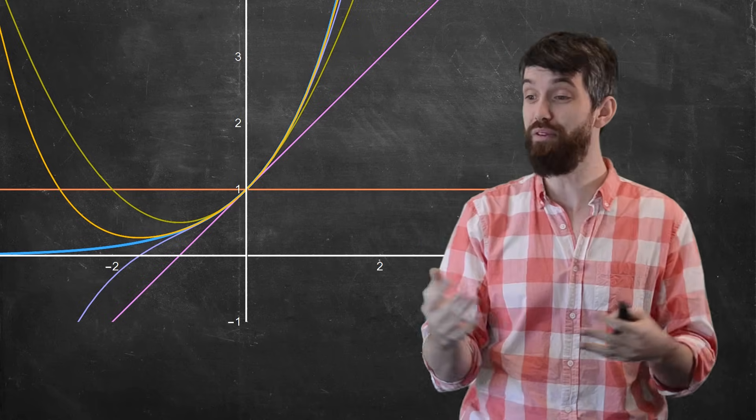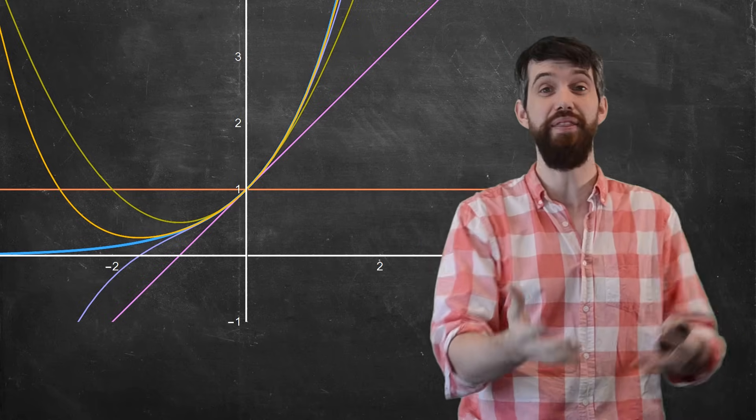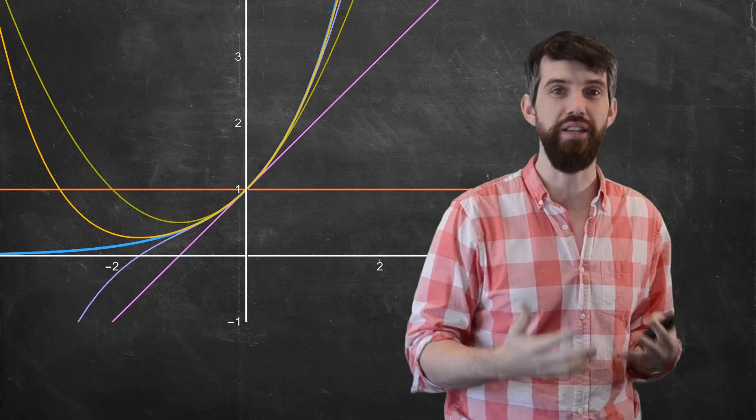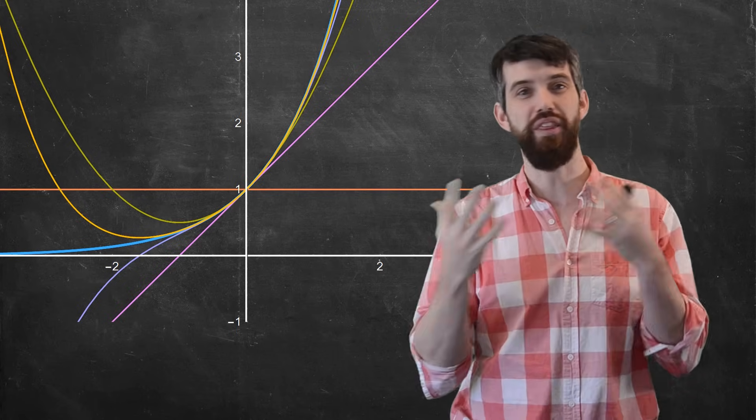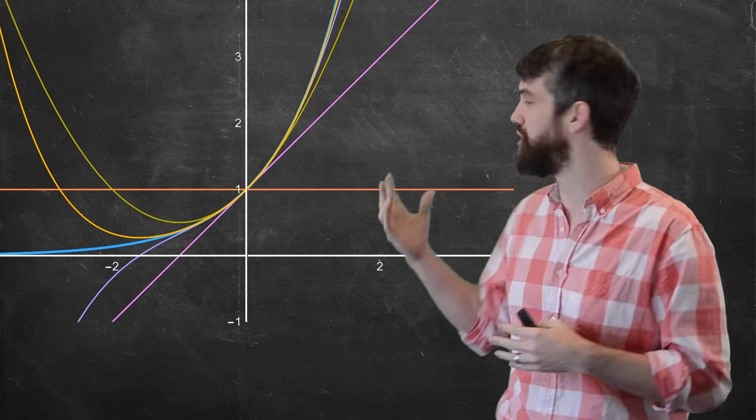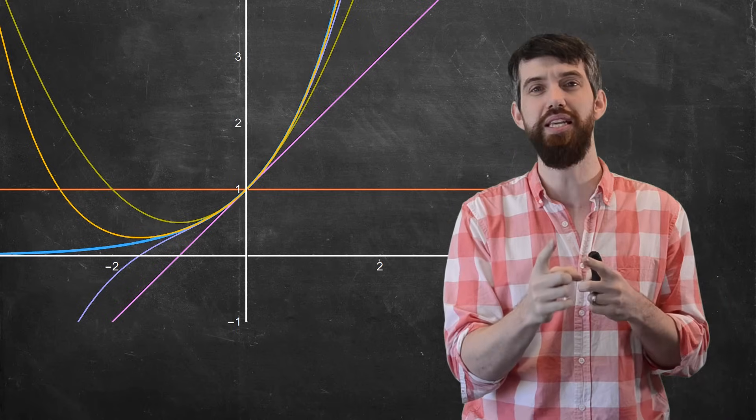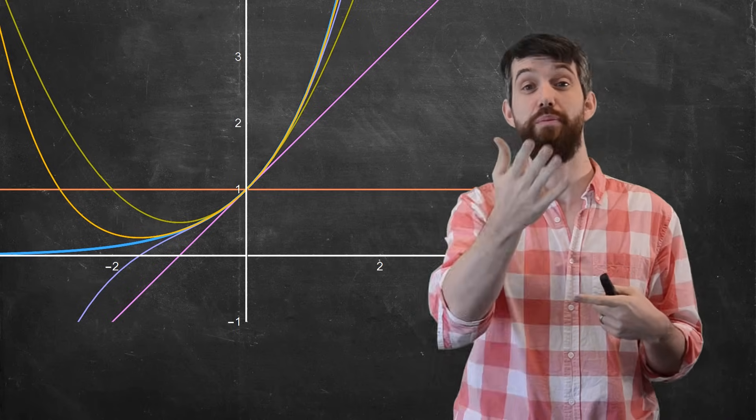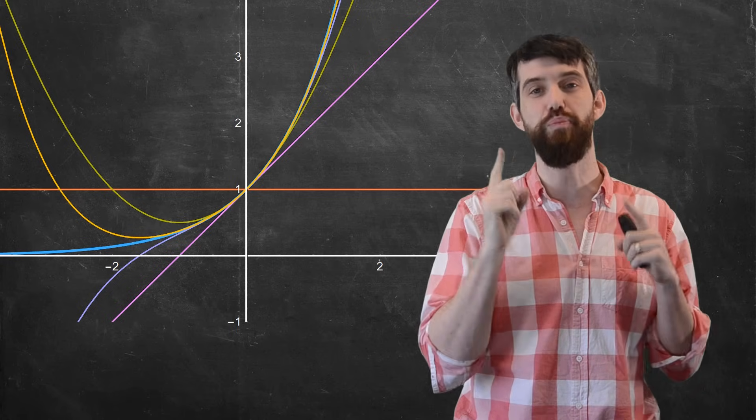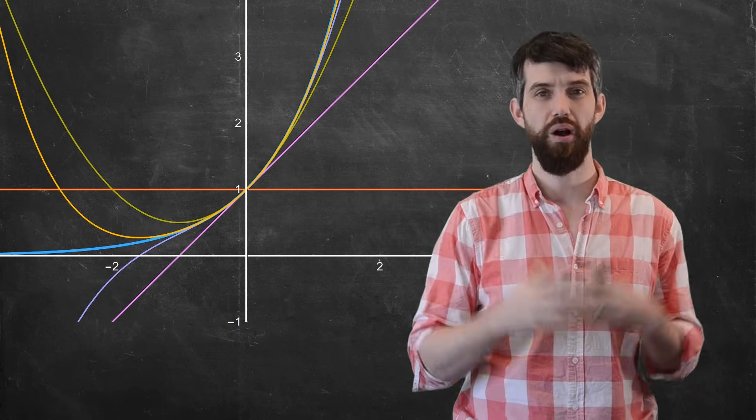And then if I want to put all of these on top of each other, I have the blue e to the x. And I put the constant, the linear, the quadratic, the cubic, and the quartic approximations all on the screen. And what you can see is that the higher the degree of the polynomial, for example, the quartic, the better the approximation becomes.